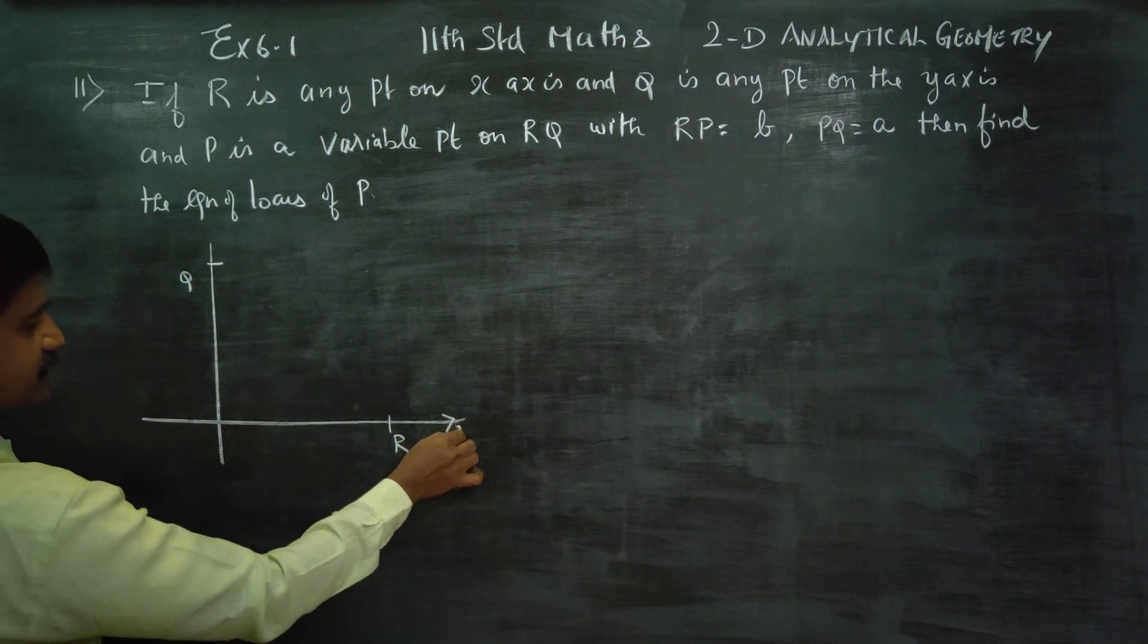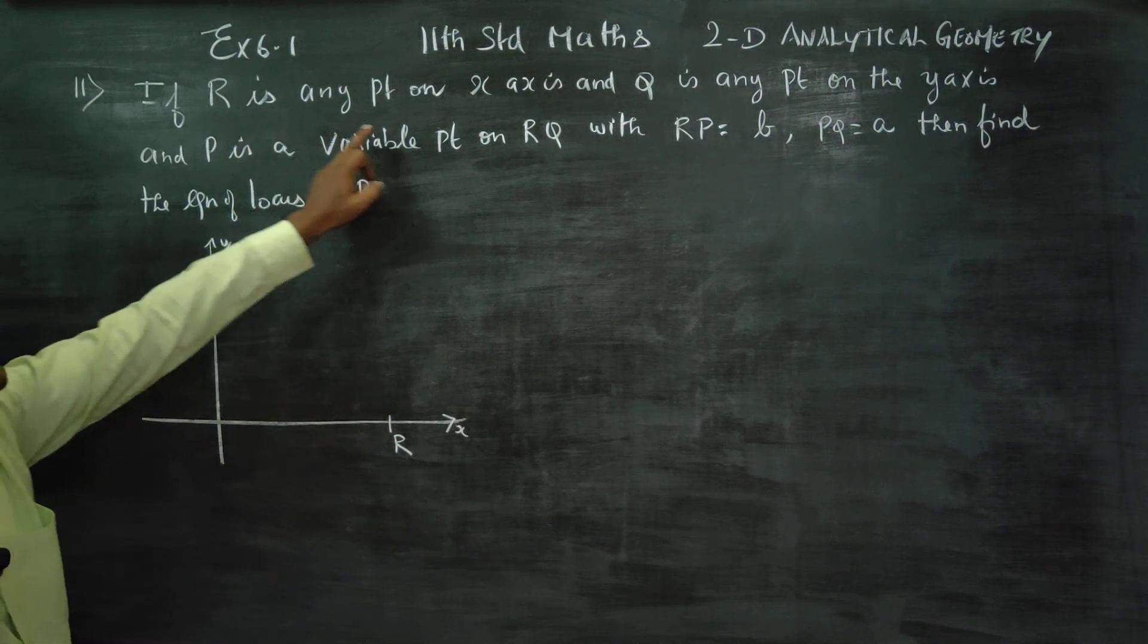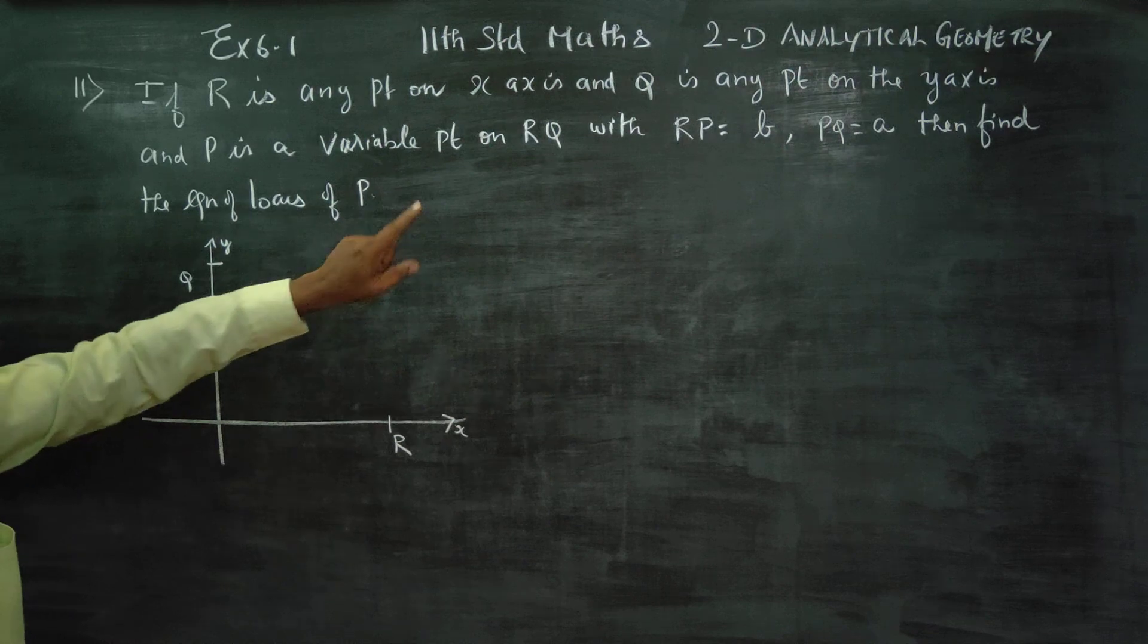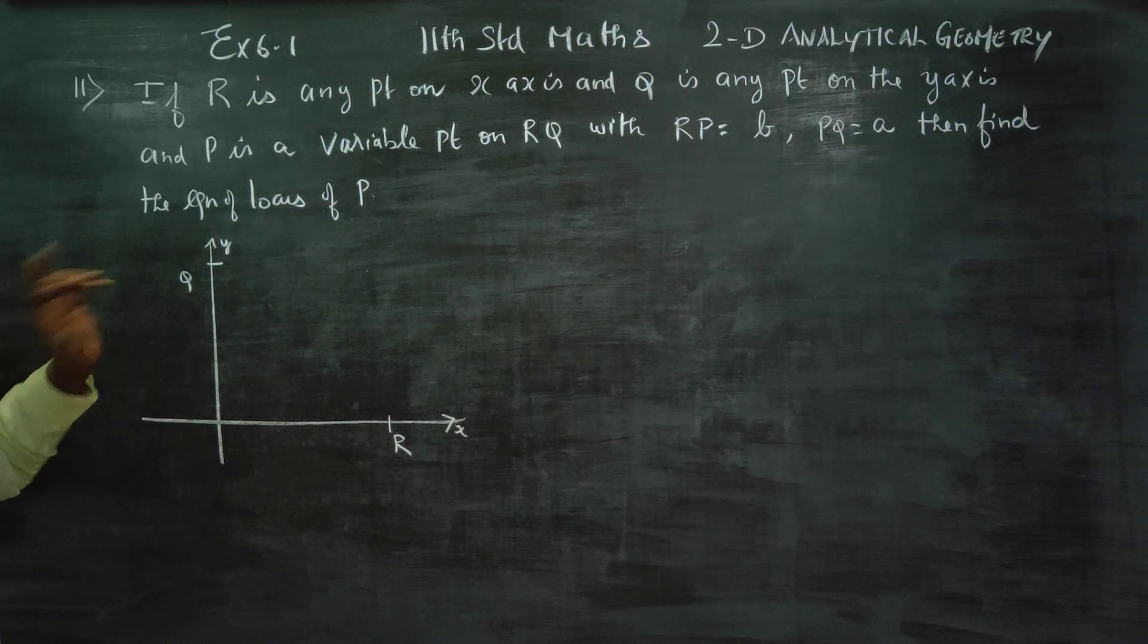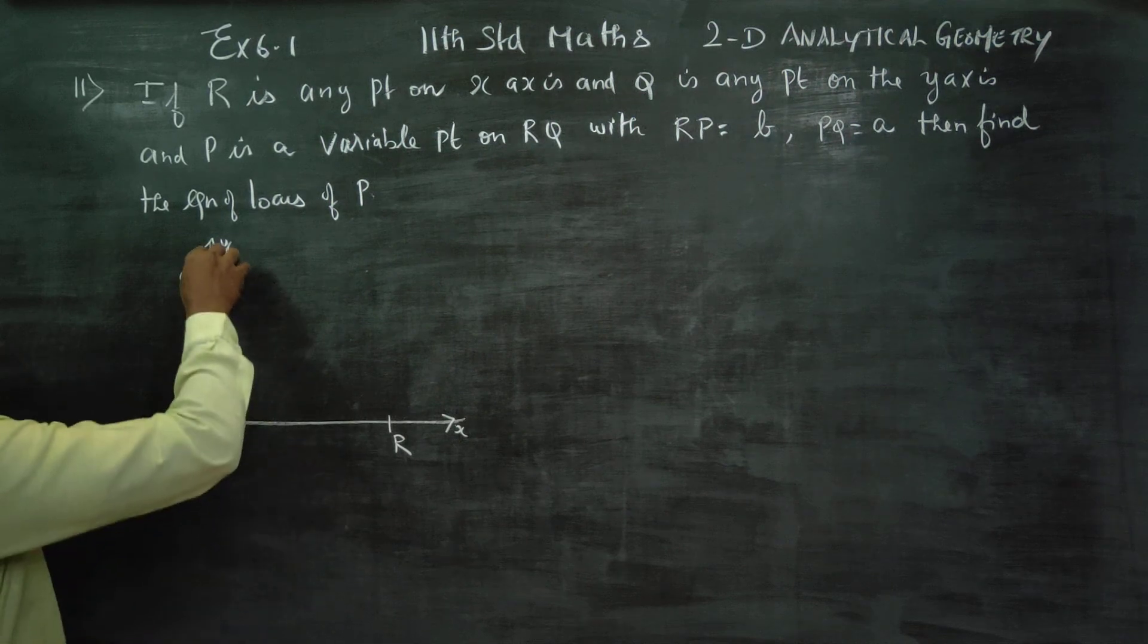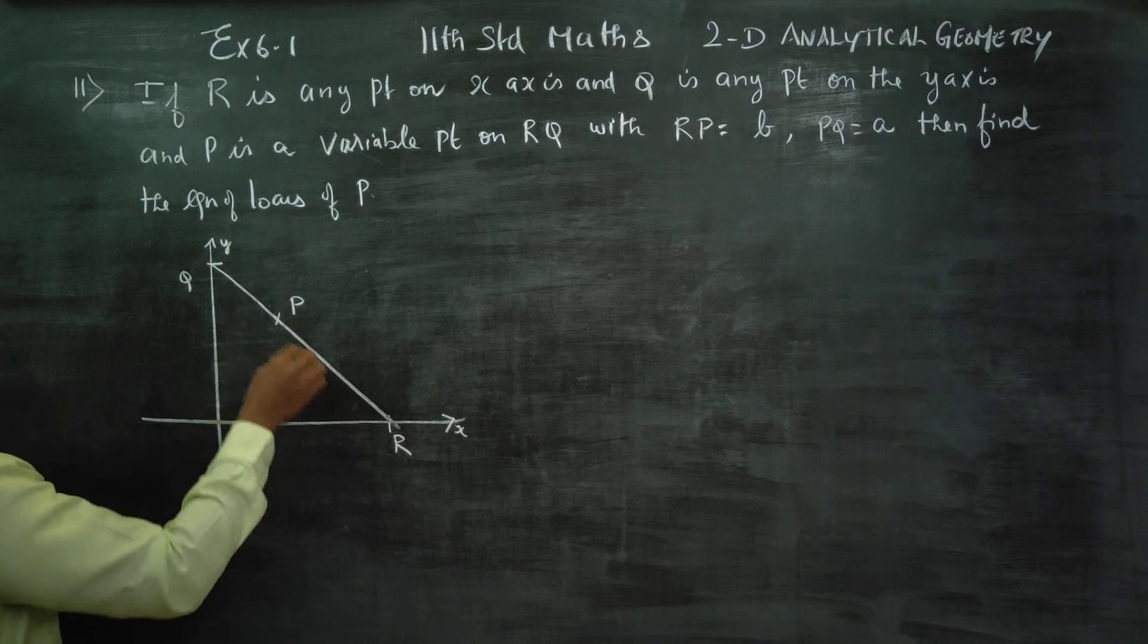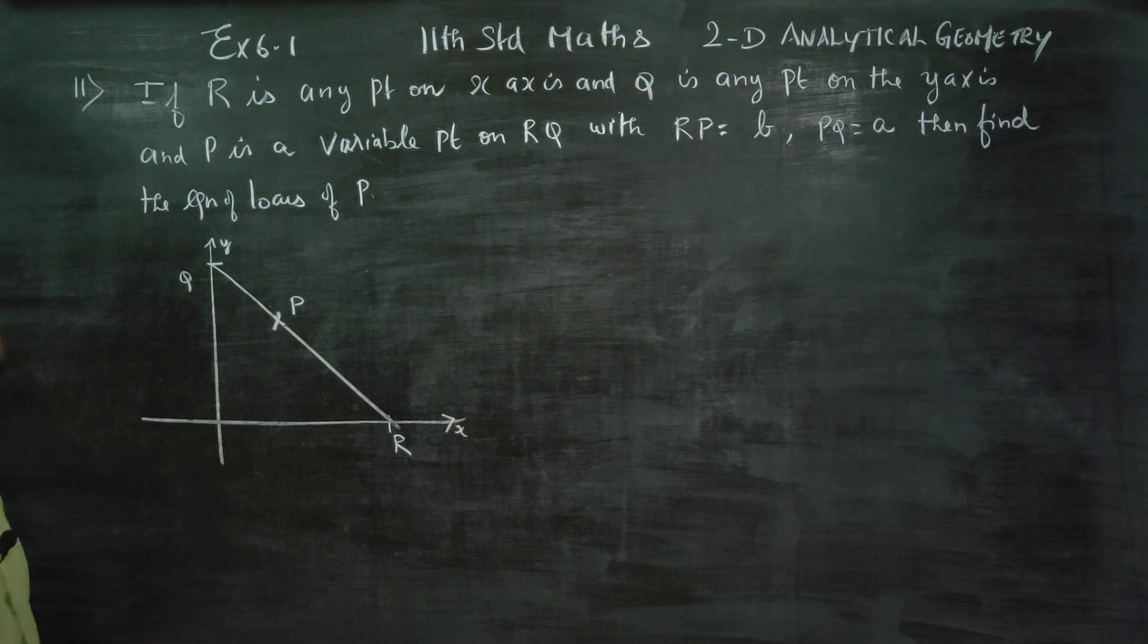This is my x-axis and this is my y-axis. On the x-axis, R is any point, and Q is any point on the y-axis. Fine. P is a variable point on RQ. This is a moving point, it's a variable point.